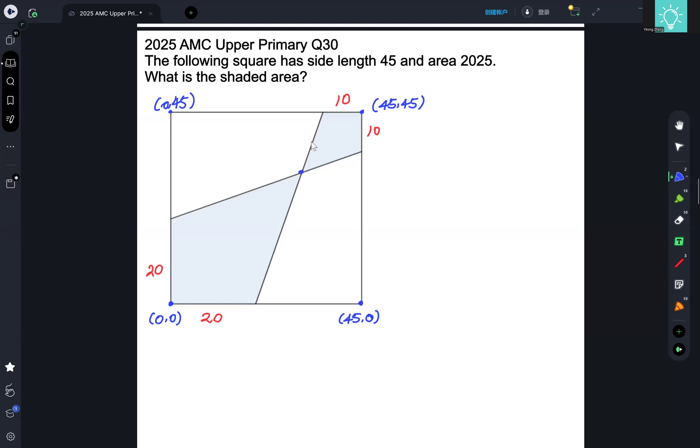And given our lengths to be 10 and 20, we can see that this point is 20, 0. This point is 0, 20. This point is 45, 35. And this point is 35, 45.